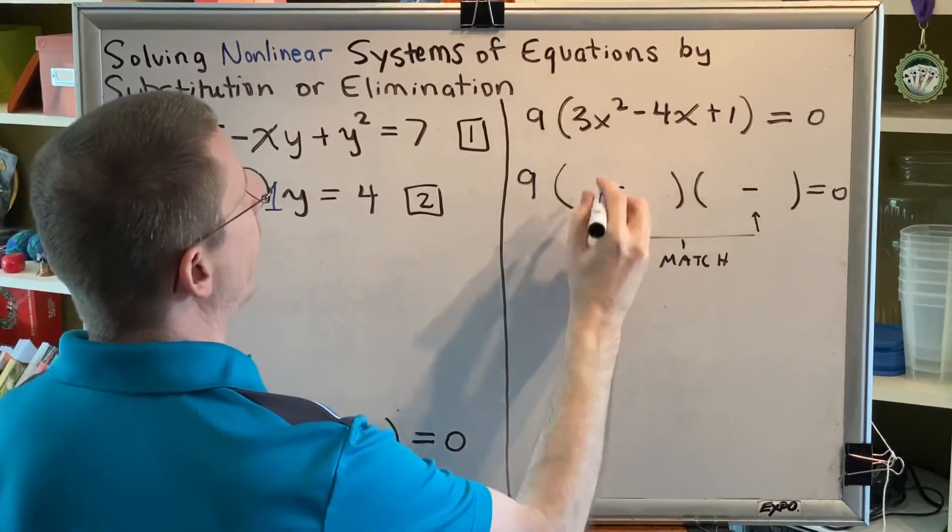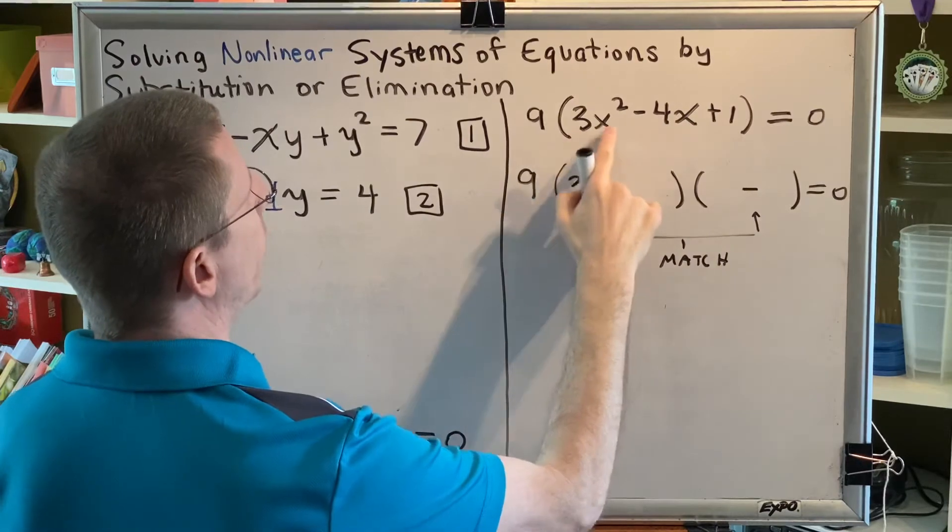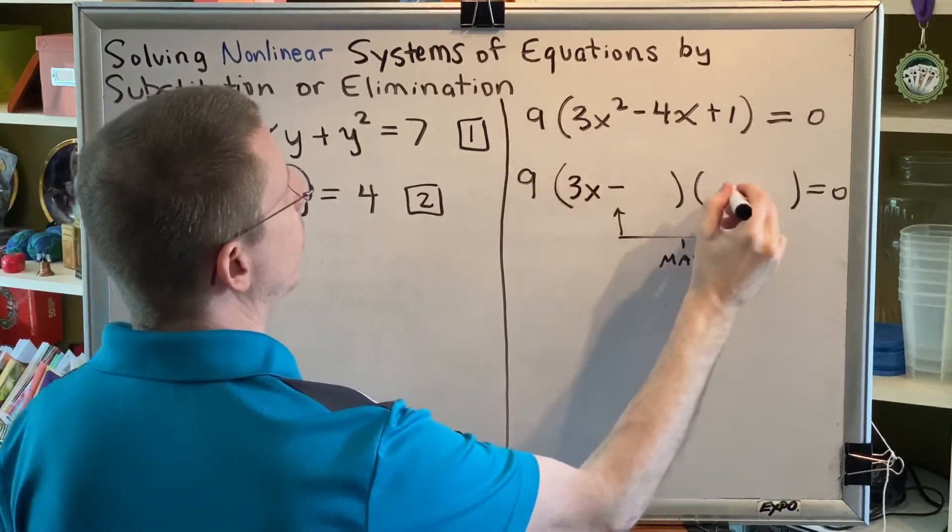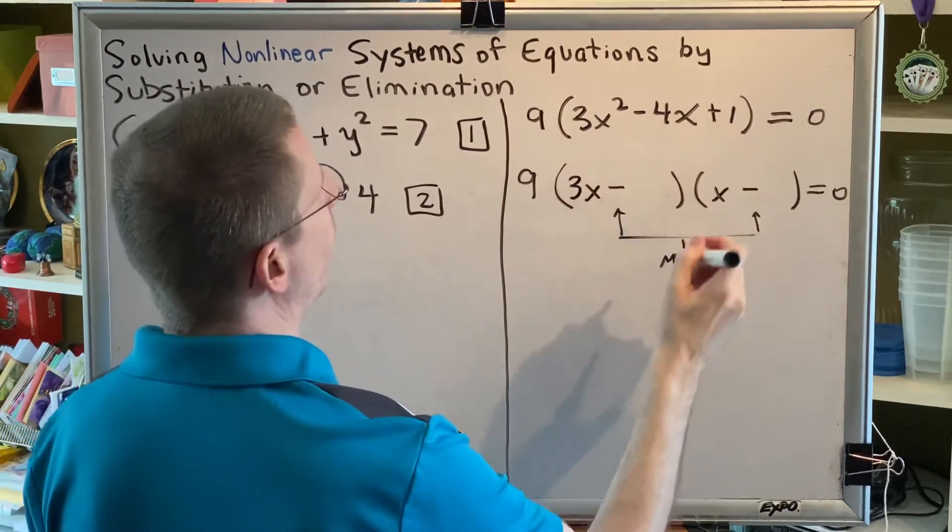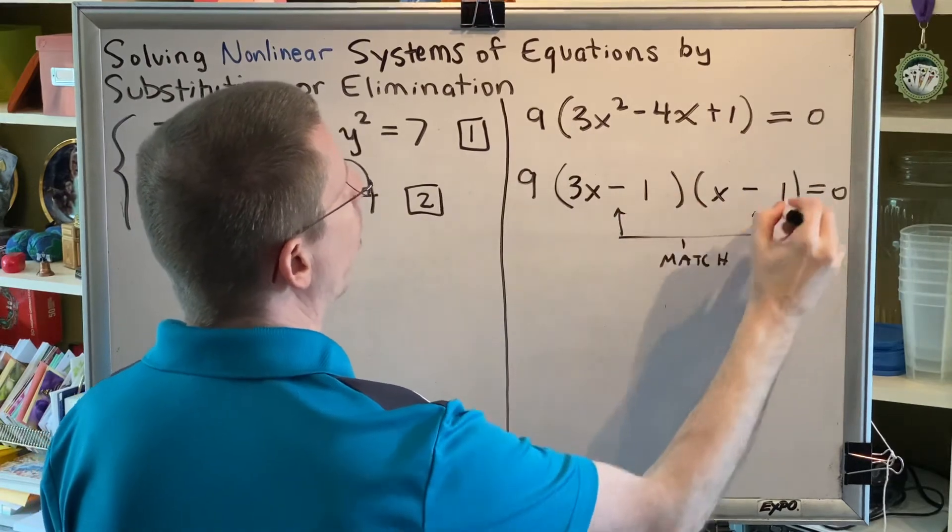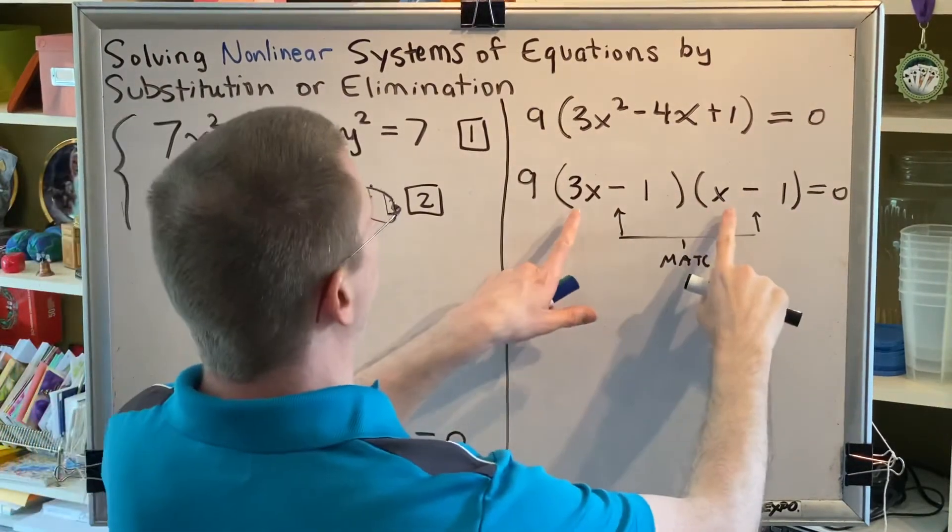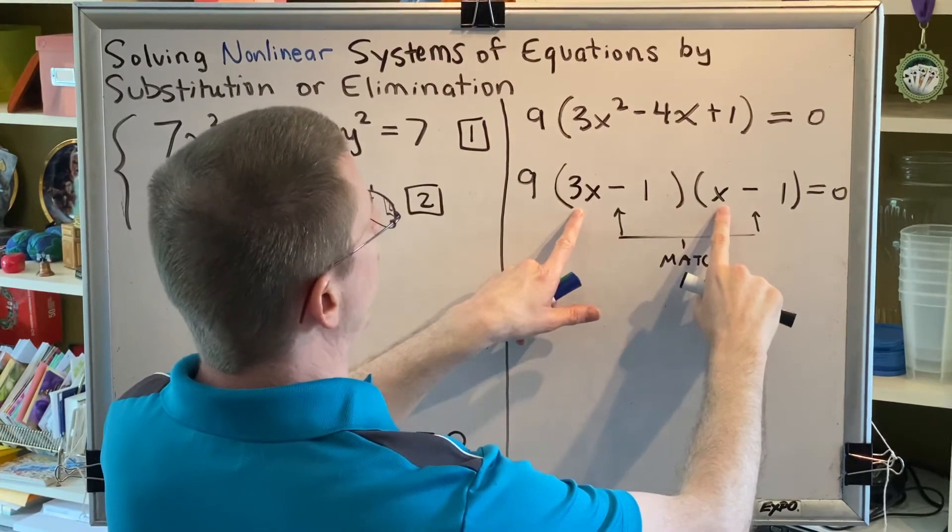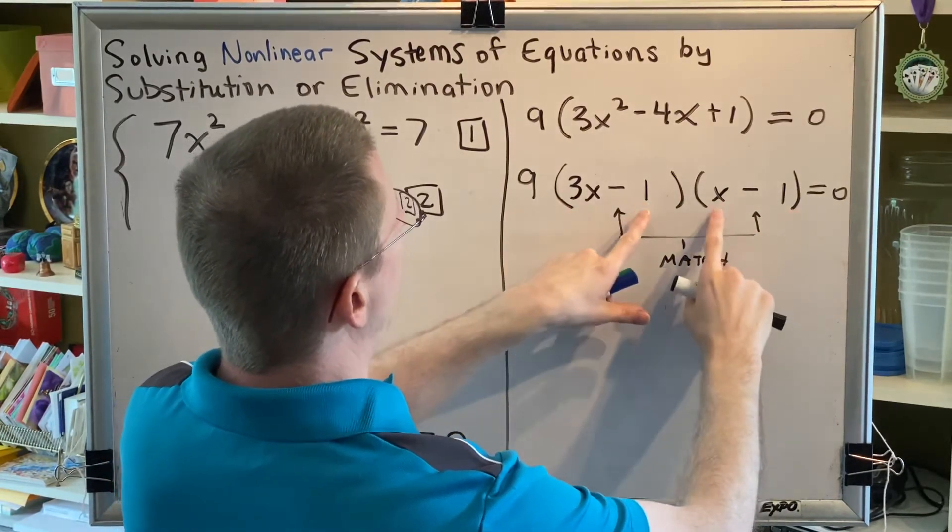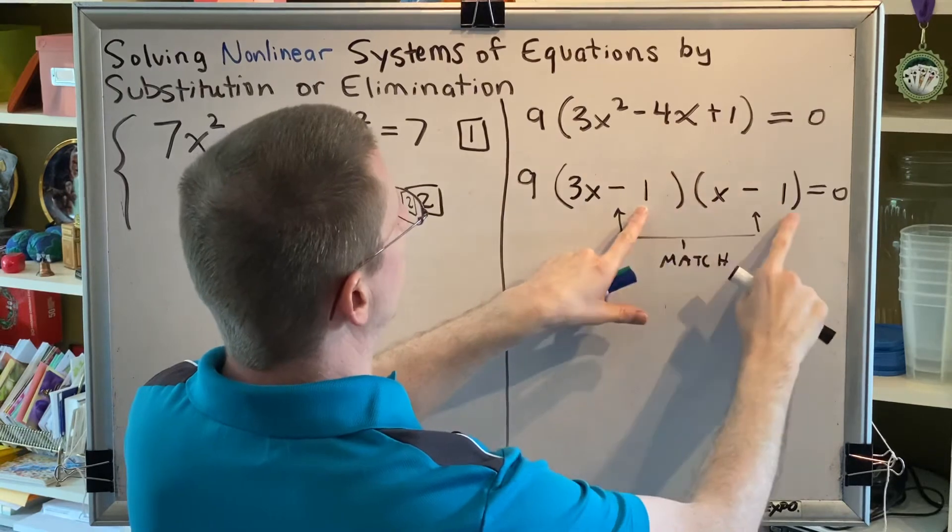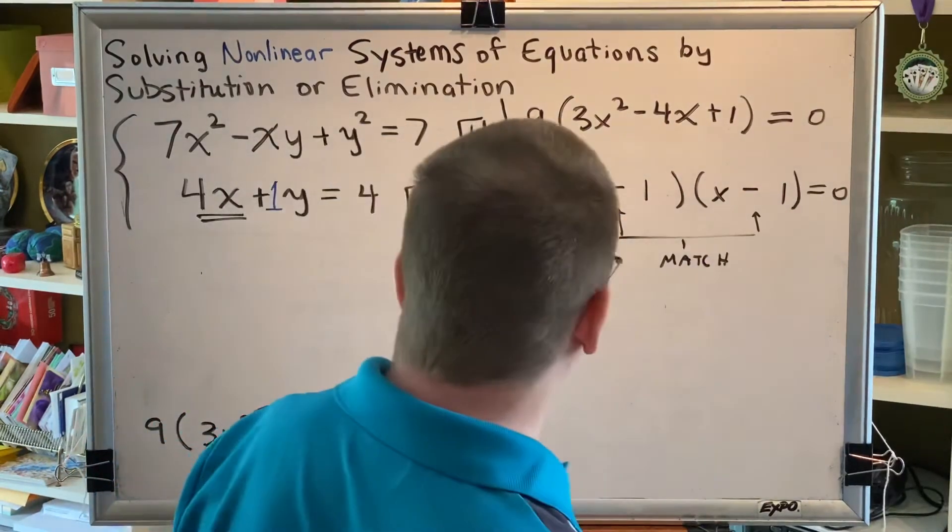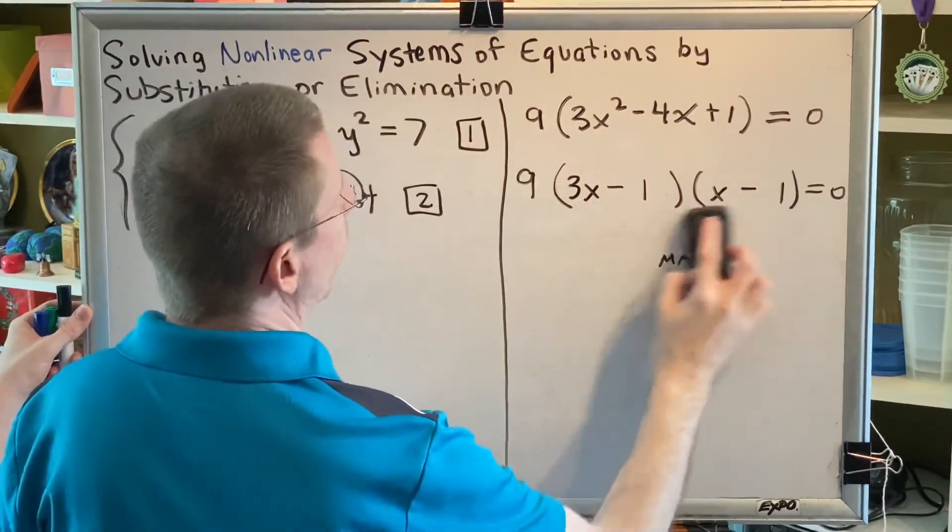The only way to make 3x squared would be a 3x and an x. And the only way to make 1 is a 1 and a 1. Now all we have to do is check it and see if this is the correct factor. So with FOIL we check, 3x squared, minus 3x minus another makes minus 4x, plus 1. So, this was a pretty easy factoring problem.